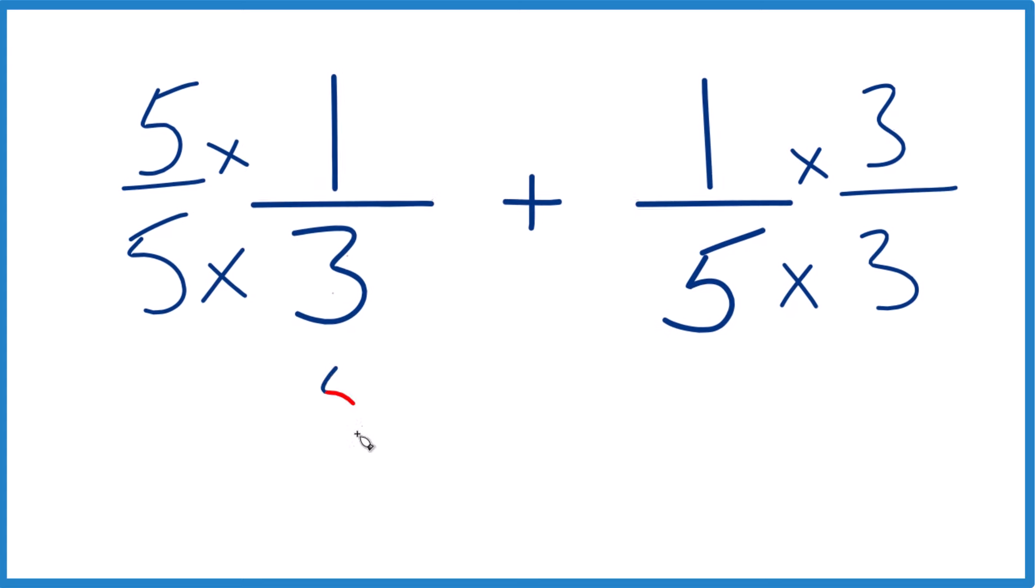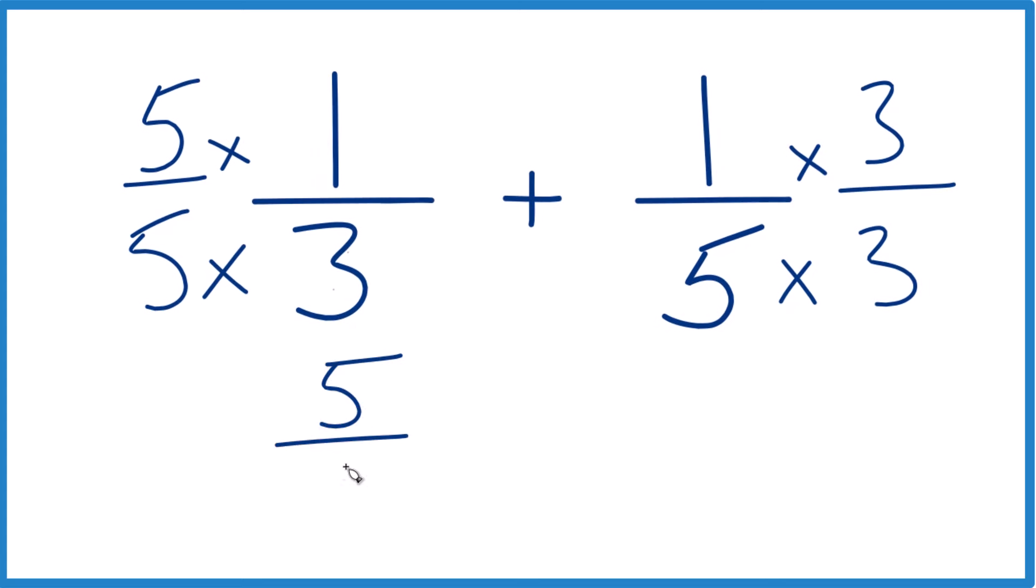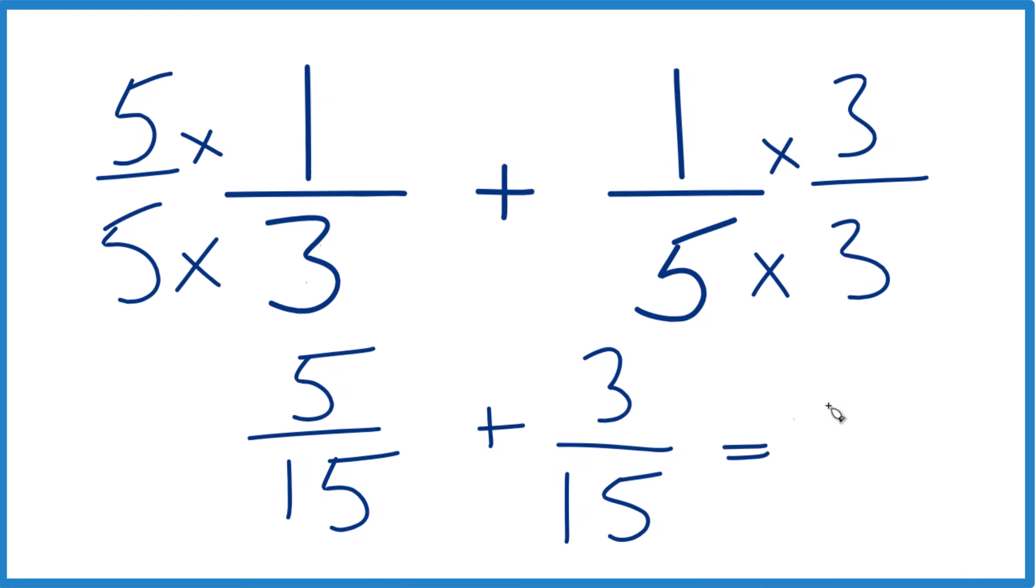And now five times one is five. Five times three is 15 plus one times three. That's three. Five times three is 15. So we have the same denominator. We're just going to add these numerators. Five plus three, that equals eight.